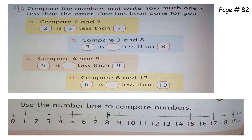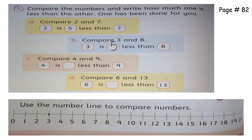We have to see how many steps three will have to move to reach eight. Let's count: one, two, three, four, five. Three has moved five steps, so three is five less than eight.